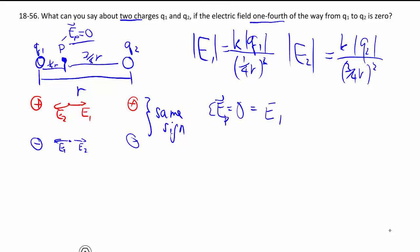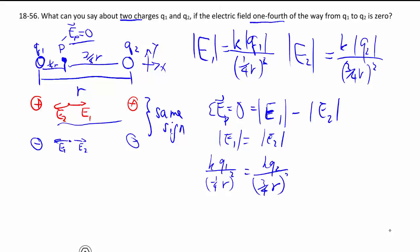It's equal to e1. Let's set up a proper x and y axis. So e1 we'll say it's positive. We'll assume this case because it's going to give us the same answer anyway. e1 is positive then minus the magnitude of e2. So we know that e1 must equal to e2 size-wise. So we have kq1 over one quarter r square is equal to kq2, three quarter r square.